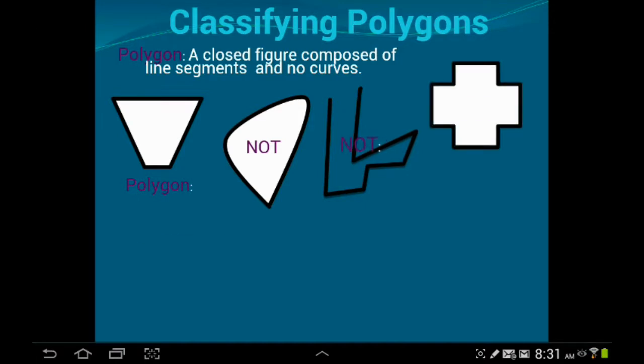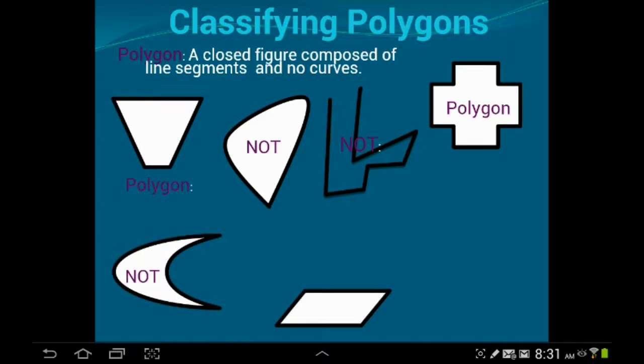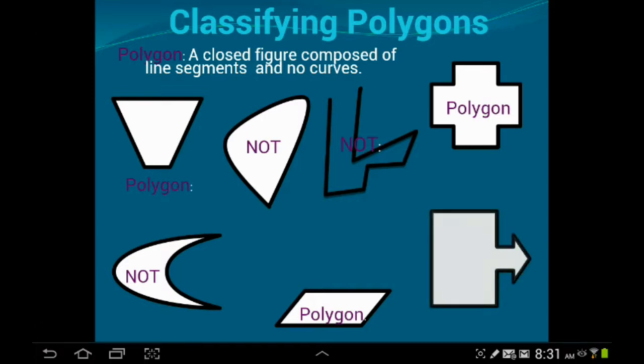This is a polygon. This is not. Right here, we have a parallelogram, and that is definitely a polygon. It's made up of line segments. It's closed. There's no curves in it. And right here, kind of an unusual figure, but yeah, that is still a polygon.